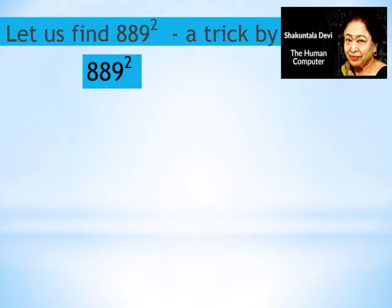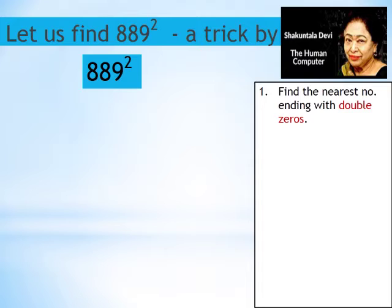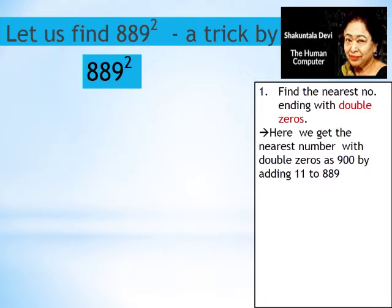Here in the slide we will find the square of the number 889. First let us find a number nearest to 889 that ends with double zeros. So the number with double zero can be 900 or 800, but 900 is the nearest number to 889.